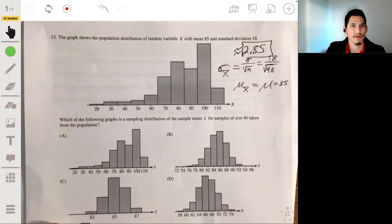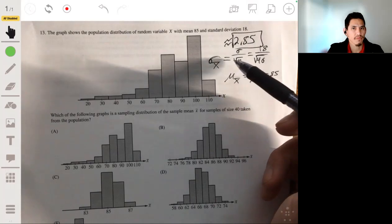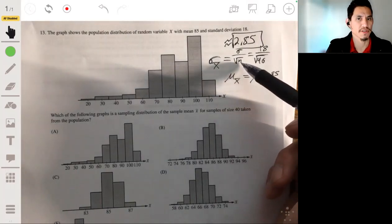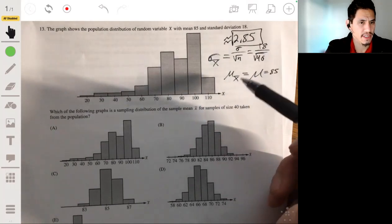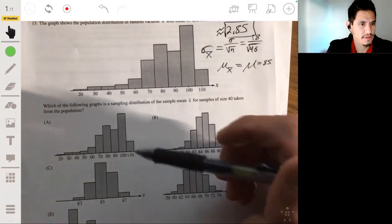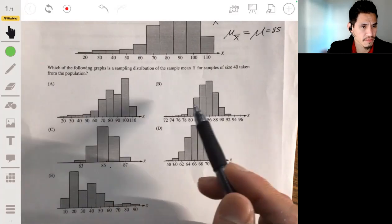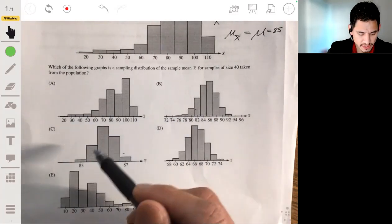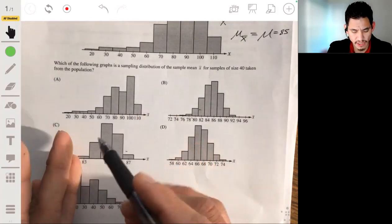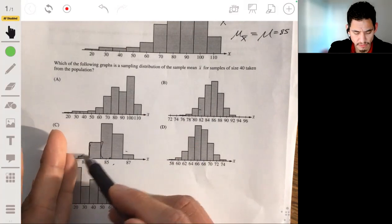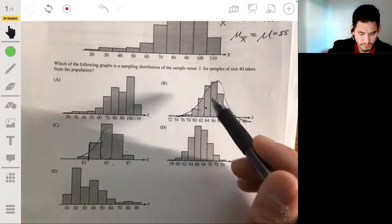And since our sample is at least 30, the central limit theorem applies. So then we know that sampling distribution will be approximately normal. So let's look for the one that's centered at 85. So we could be C or B looks like, but C is not, it's not normal enough. Like it's too, there's on like the, it looks more like a histogram. We need more smoothness. So B would be an answer that's, that fits a normal distribution approximately.